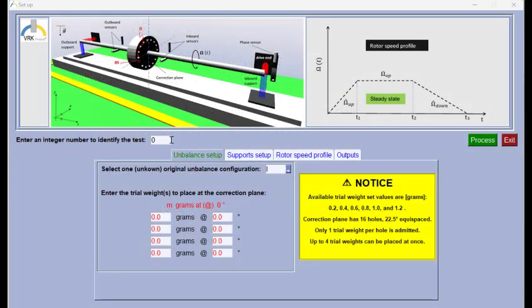We leave the unbalance configuration as 1. We have 0.2 grams at 225 degrees and we have 0.2 grams at 247.5 degrees.